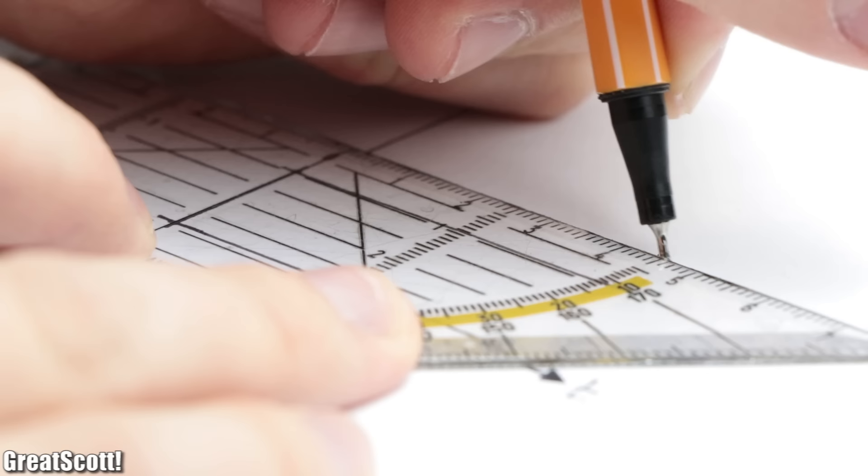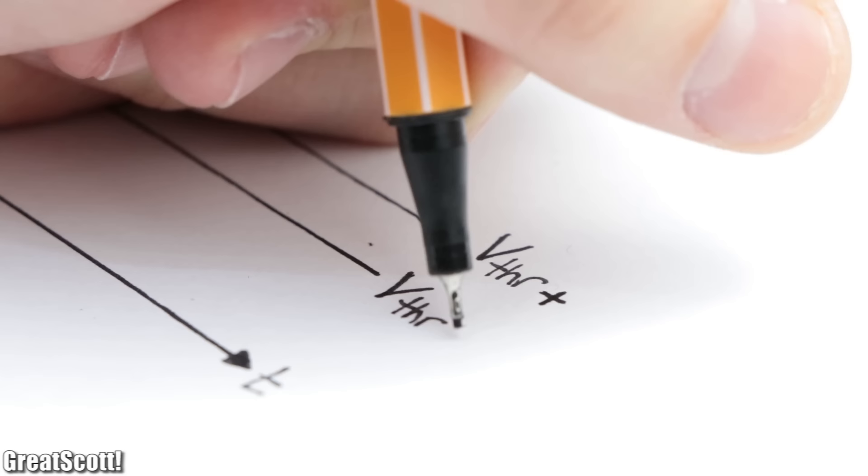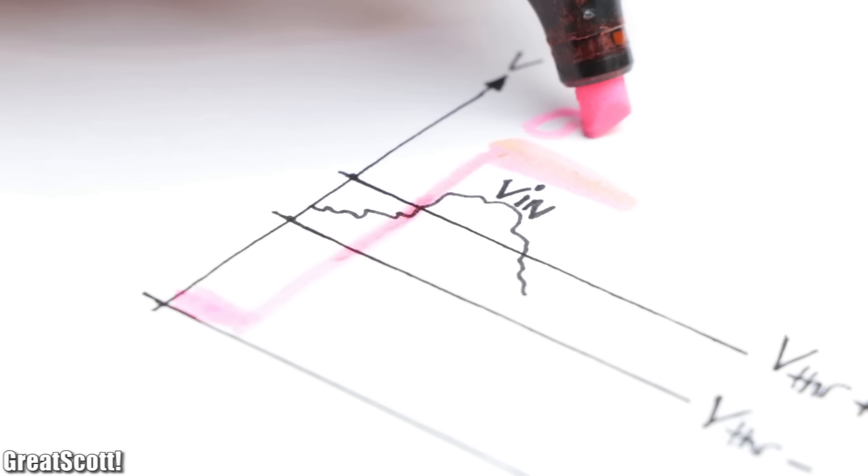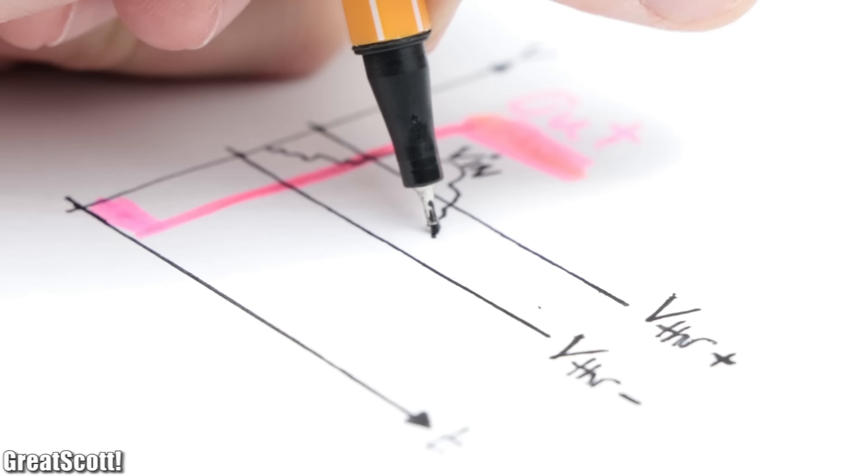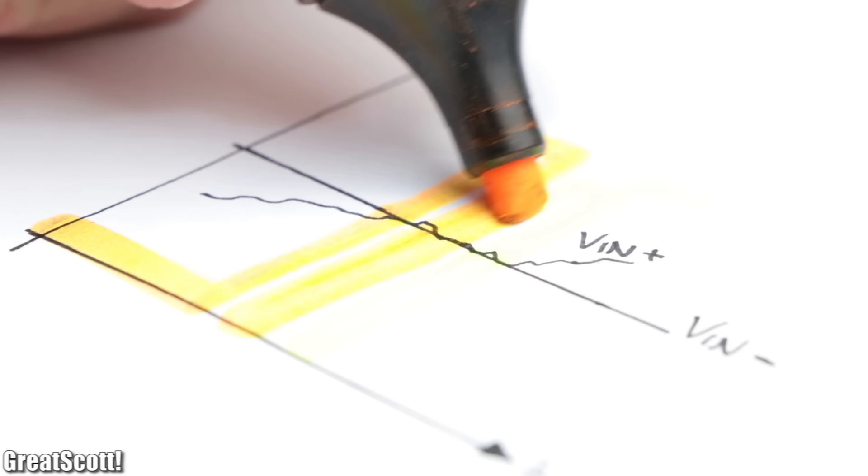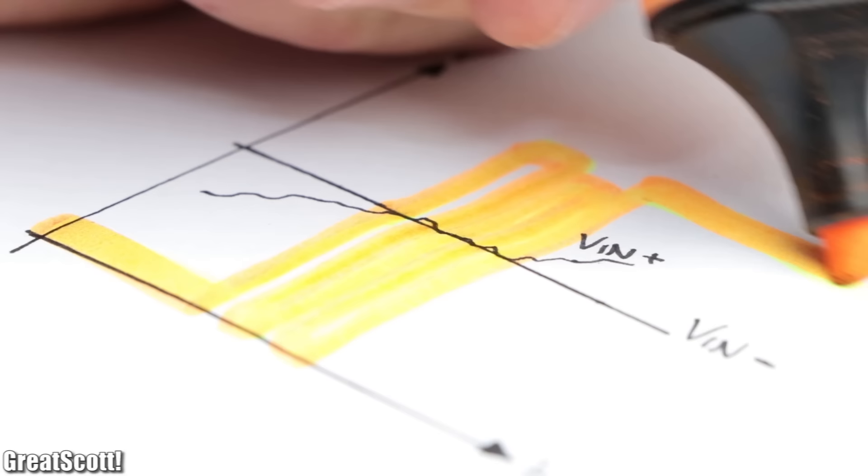A Schmitt trigger, on the other hand, offers two threshold values—a high one and a low one. So only if the to-be-monitored voltage passes the high threshold value, the output gets pulled high. And only if the low threshold value gets undershot, the output gets pulled low. This way we can avoid noise-caused oscillation on the output.